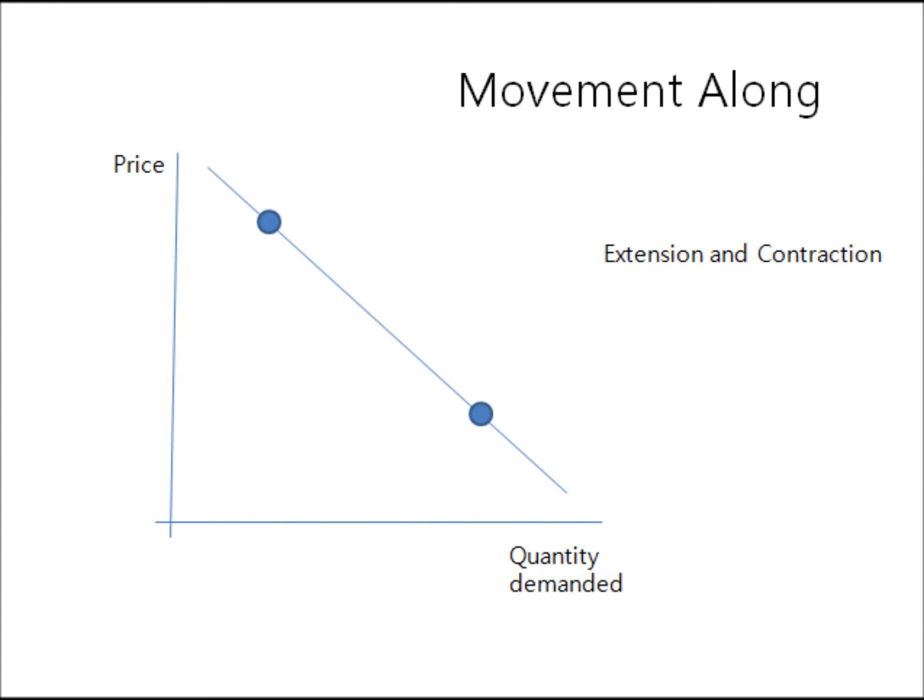If there's point one and if you move to this area, then it's still on the curve. That's movement along. It did not go outside somewhere else. When the point moves, there can be extension or contraction of demand in this case, because this is a quantity demanded graph.